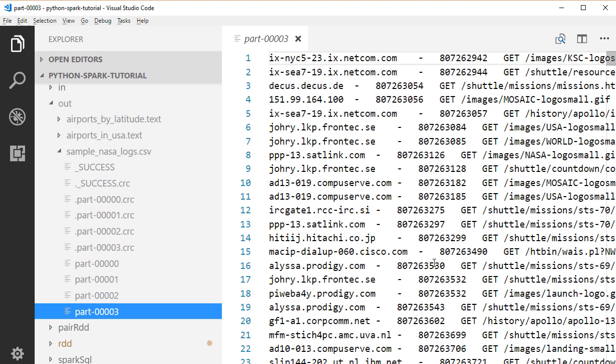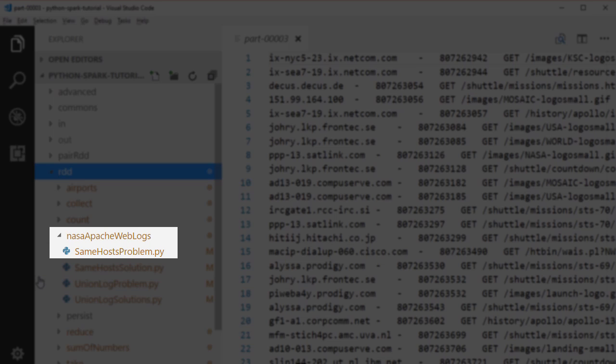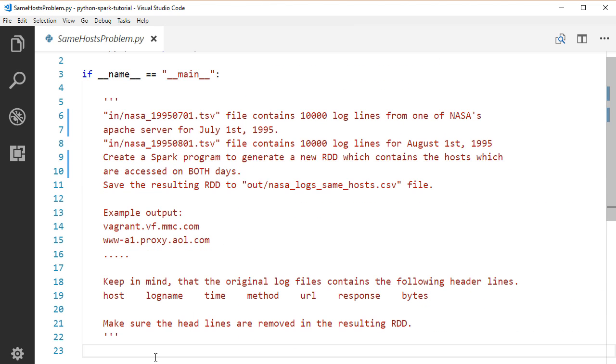It's time for you to do a practice. Let's open the same hosts problem file. We'll still be working on those two log files. Your task is to create a Spark program to generate a new RDD which contains the hosts which are accessed on both July 1st and August 1st. So, the resulting RDD will only contain the same hosts, not the full log lines. Now, give a try to implement the solution in this file. We'll discuss the example solution in the next lecture.